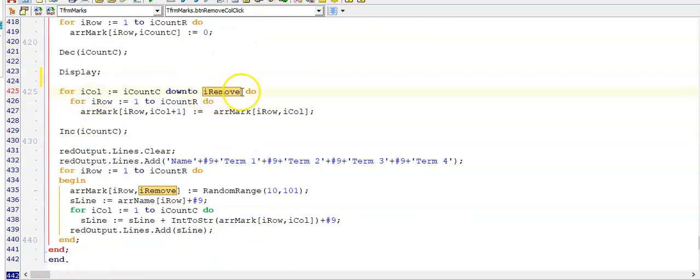So iRemove was the value that the user entered of the column they wanted to be removed. But now you were asked to put a new column back in that same position. So that's why I'm using my same variable here. And I'm starting at the end of my loop. And I'm looping down to this position.